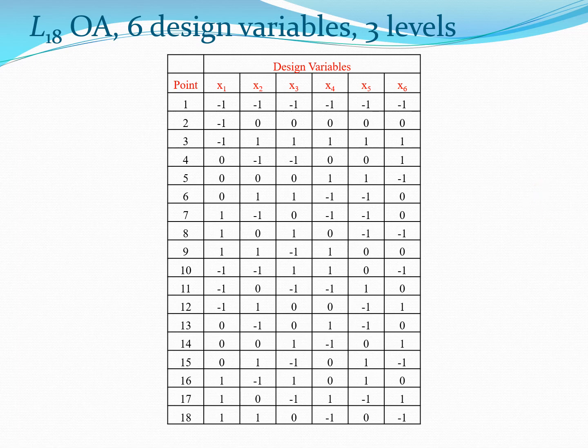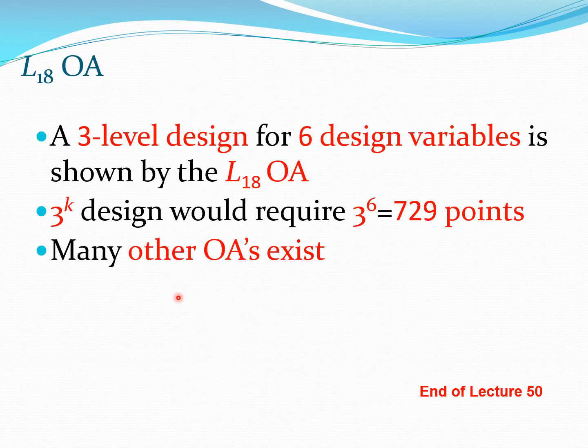So let's now compare this with the design if you had a full factorial type situation. So let us say you decided to take a 3^k design. A 3^k design with six design variables would require 729 points. And you would be taking a 3^k design because you are considering three levels on each of the design variables. Now compare this 729 points with 18 points. This is a huge difference. And therefore this is the power of these fractional factorial models to perform quite well in these situations.